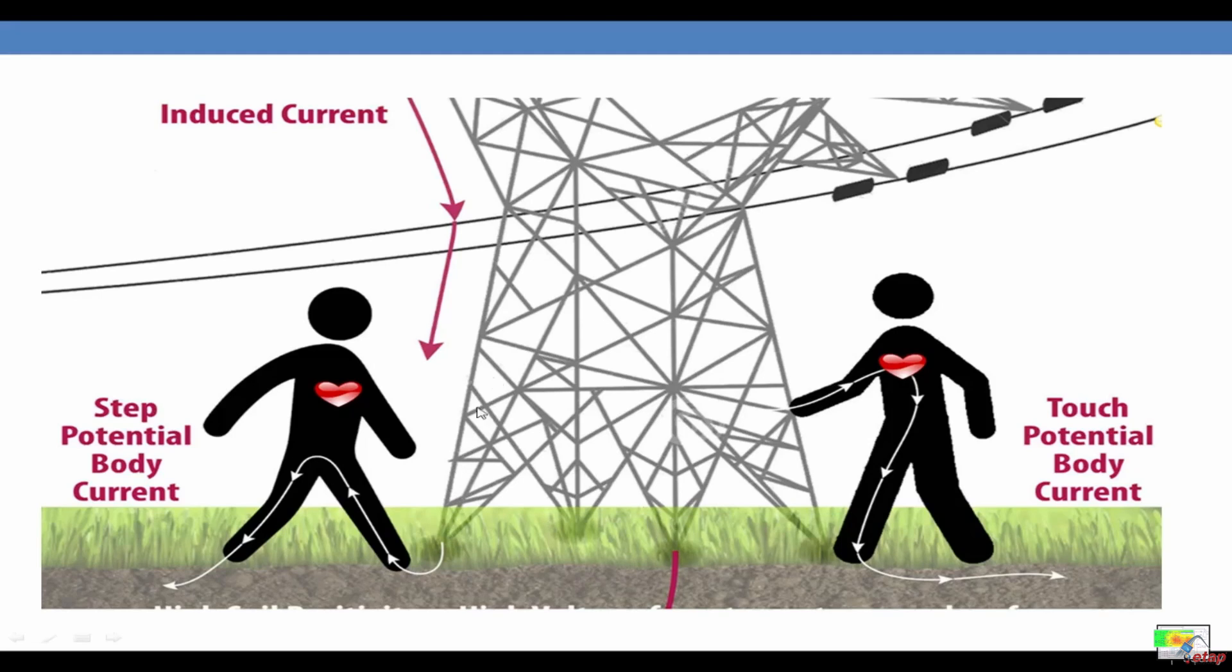Whereas in the case of step potential, the step potential will have the induced current flowing from the tower to the person's feet. Because these two feet are at different positions or different points, then the potential difference will cause a current to flow through the legs of the person. As you can see, the touch potential is much more severe than the step potential because the path of the current is through the heart in the touch potential, whereas in the step potential, the current path is only through the legs.